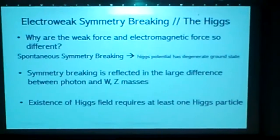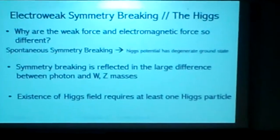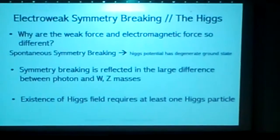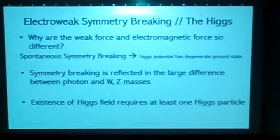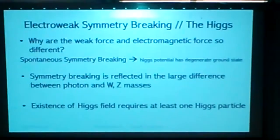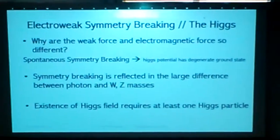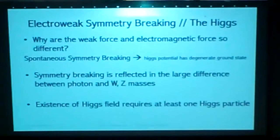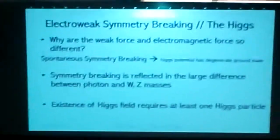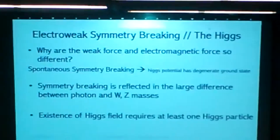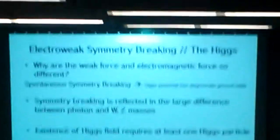The existence of the Higgs field requires there to be at least one Higgs particle, and this is why we look for this particle. Without it, the Standard Model — which explains literally everything around us, the universe, how it works — needs it. The theory says it, and now we have to find it.